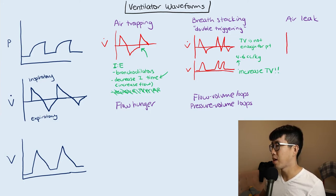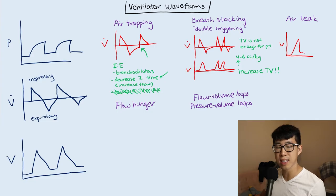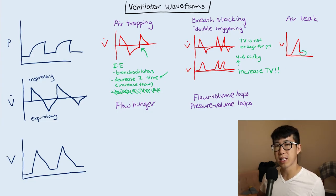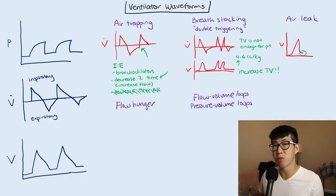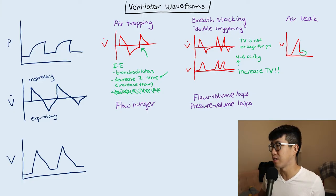Next, let's talk about air leak. This is going to be on your volume curve and you're going to see a normal inspiration, but it doesn't really go all the way to baseline. You have this kind of leak right here where basically the air has disappeared and the machine was not able to calculate that back. You're left with this kind of dead zone right here.